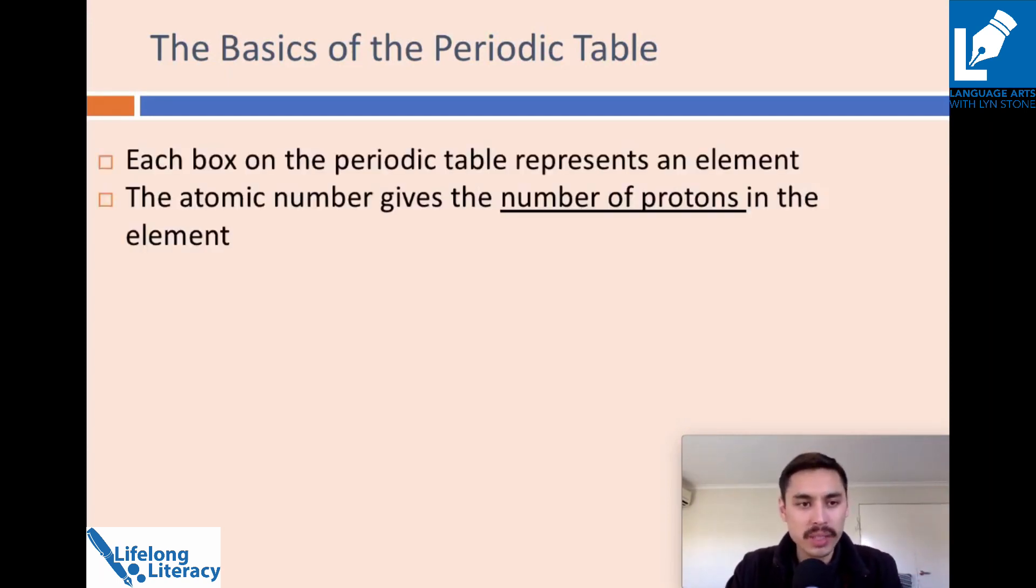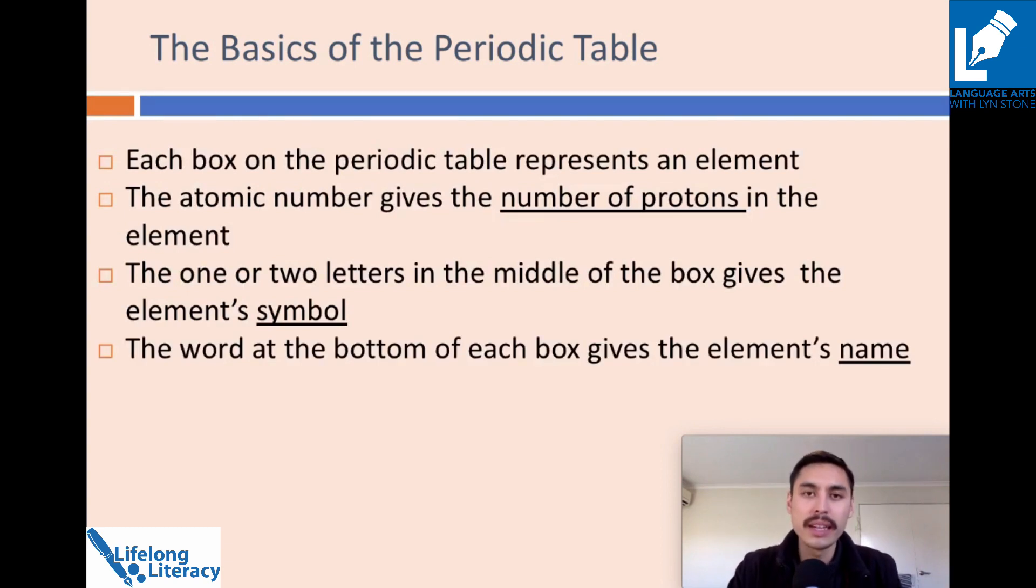So the teacher showed up the slide, had this information on it, and the teacher also presented each student with their own periodic table. And so they were saying things like, okay, each box on the periodic table represents an element. So find a box on your table, have a look at it, and identify that element. Now, the atomic number gives a number of protons and so on and so forth.